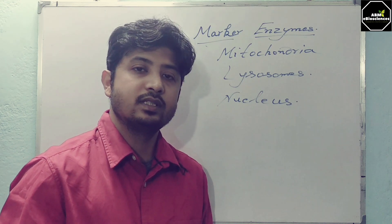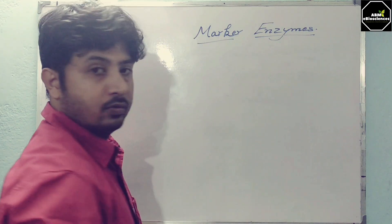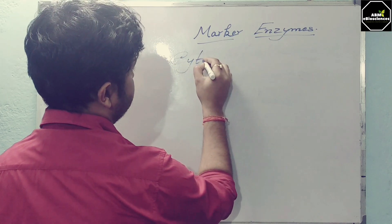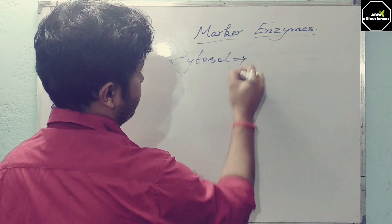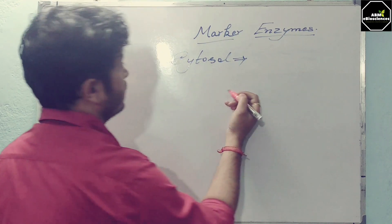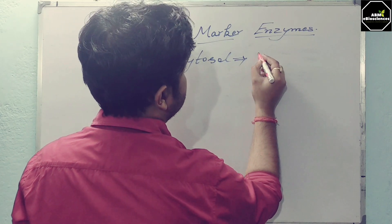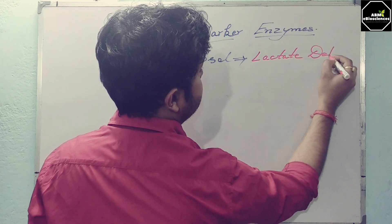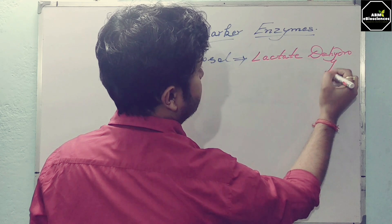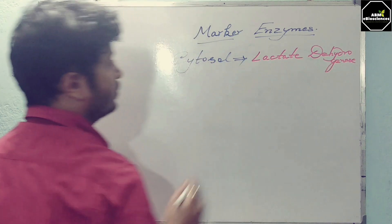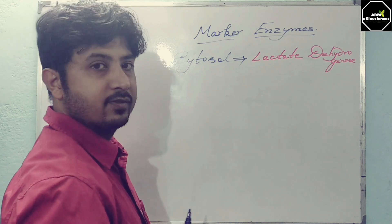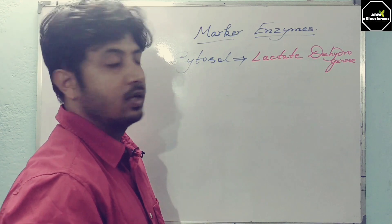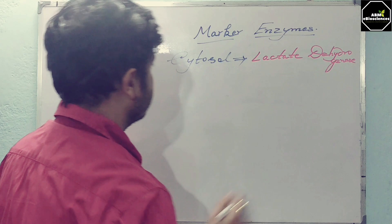Let's start. First: cytosol. The marker enzyme for the cytosol is lactate dehydrogenase. If you are working with cytosol and need to confirm its presence in your experiment, you look for the enzyme lactate dehydrogenase.